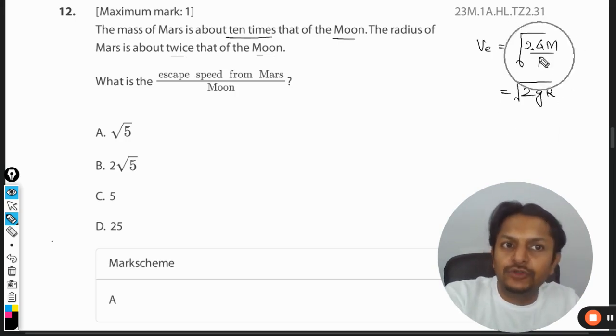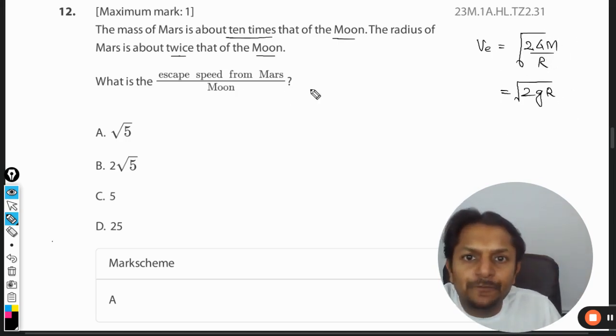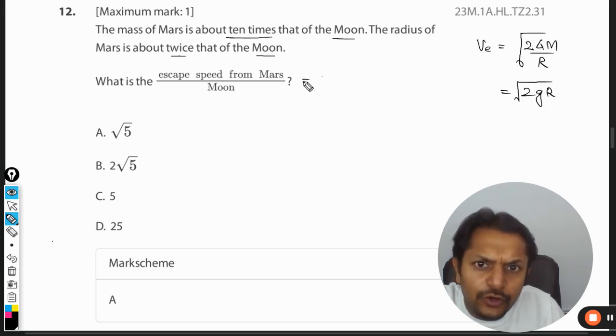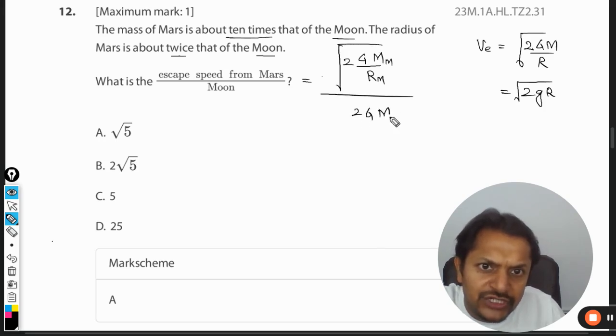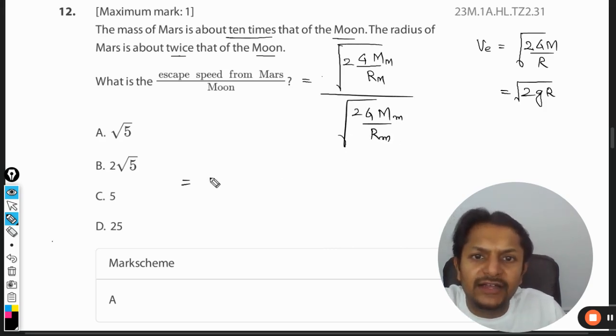So the ratios are given. Escape speed for Mars will be the square root of 2G times mass of Mars divided by radius of Mars, divided by the square root of 2G times mass of Moon divided by radius of Moon.